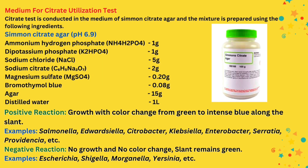In this test, Simmons citrate agar medium is used. The pH is 6.9. The ingredients are: ammonium hydrogen phosphate 1 gram, dipotassium phosphate, sodium chloride 5 gram, sodium citrate 2 gram, magnesium sulfate 0.20 gram, bromothymol blue 0.08 gram, agar 50 gram — measured per 1 liter of distilled water.